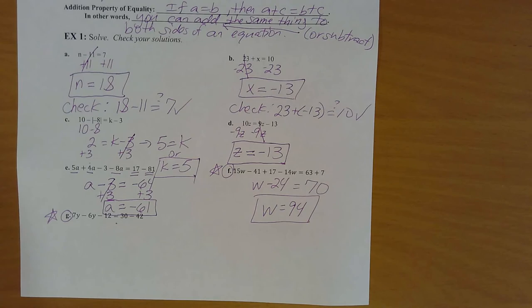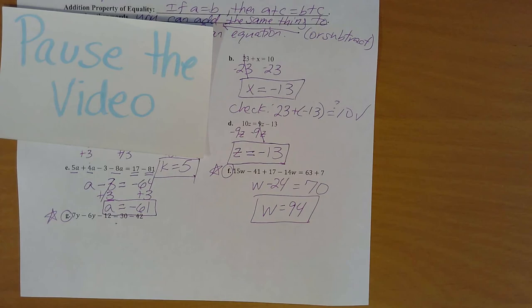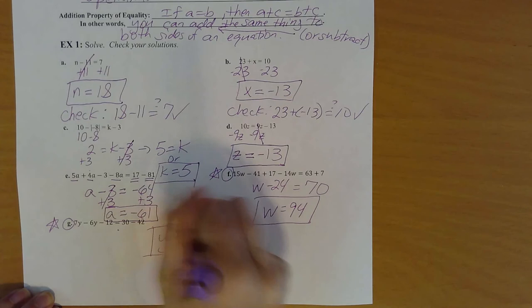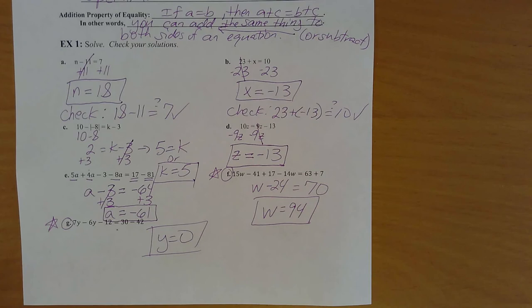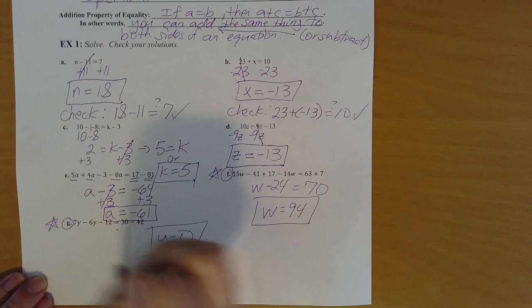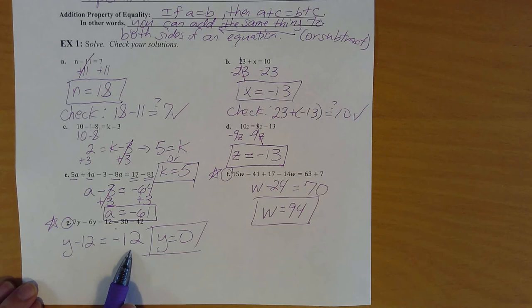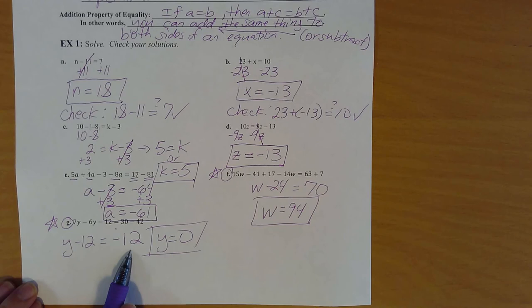Try part g — pause your video one more time and see if you can solve this equation. In part g, you should get y equals zero. I know that feels like no solution, but it's not — zero is a number. Once you simplify, on the left side you'll get y minus 12 and on the right side you'll get negative 12. When you add 12 to both sides, you get y equals zero, which is a valid answer.